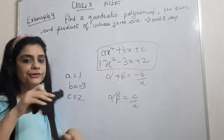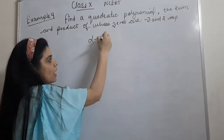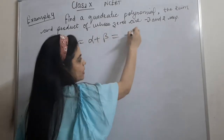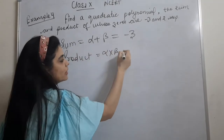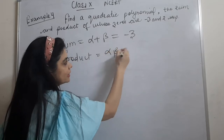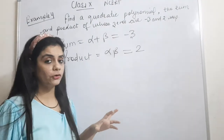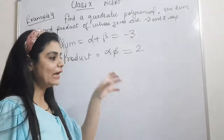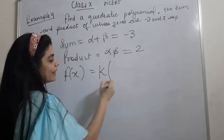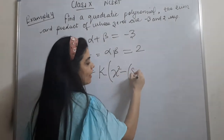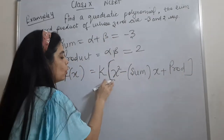Now the question has been reversed — we have the sum and product given. We have alpha plus beta, which is the sum, and alpha times beta, which is the product. When we have to write a quadratic polynomial, let it be denoted by f(x). So f(x) will be equal to k times bracket x squared minus (sum)x plus product. This is the formula to find the quadratic polynomial.